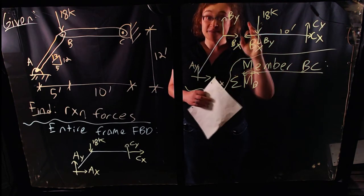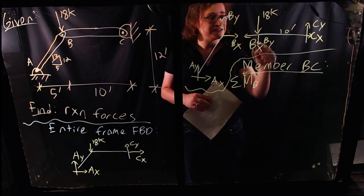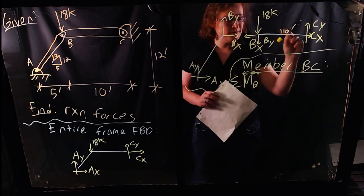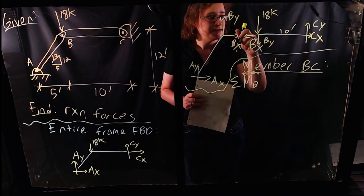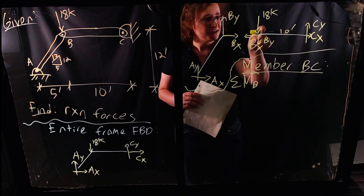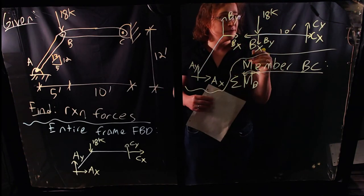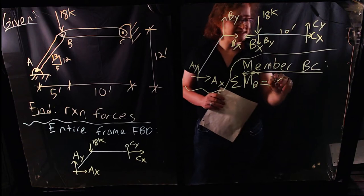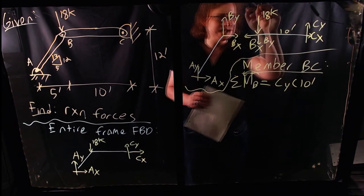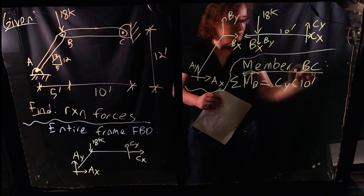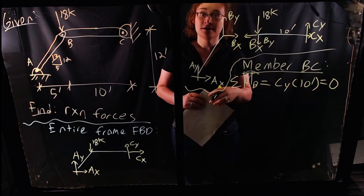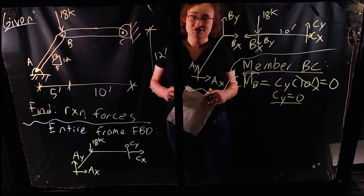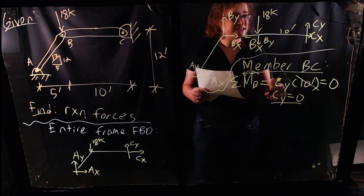Since we're in static equilibrium, this equals zero. The only way to balance the equation is if CY equals zero. So just from that, we've already determined one reaction: CY = 0. Now I'll do a summation of forces in the Y direction on member BC. I have the downward external force of negative 18 kips, and BY is pointed downward so I write negative BY. All of this sums to zero, and solving for BY gives BY = negative 18 kips.